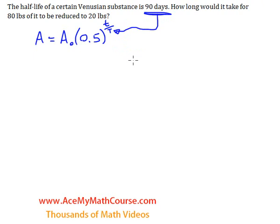And how long would it take for 80 pounds of it to be reduced to 20 pounds? So the 80 can go over here because that's the beginning amount and it's reduced to 20 pounds.